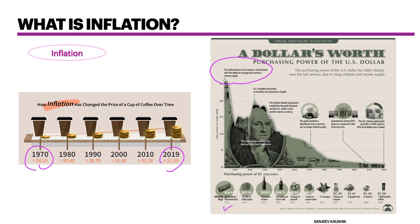Did you know the Federal Reserve was actually created in 1913? Back then, you could buy 30 Hershey's chocolate bars for $1. As you can see, this is how the dollar has declined in value — nowadays with $1 you can buy a McDonald's coffee. The value of the dollar has been declining consistently.